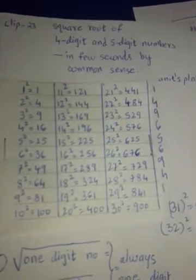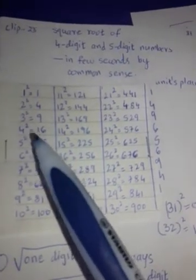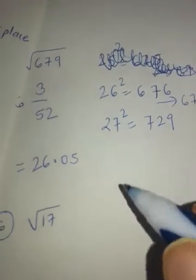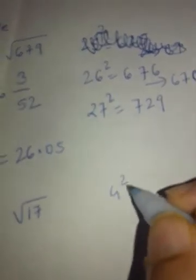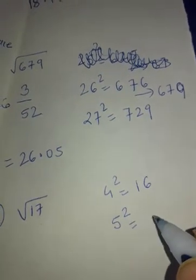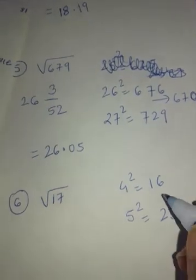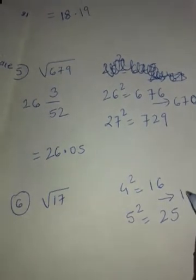Try to memorize it. This 17 lies between which two squares? It lies between 4 square and 5 square. So let me write it here. And all these things I am writing just to explain. You don't have to write everything. This is just for explaining.